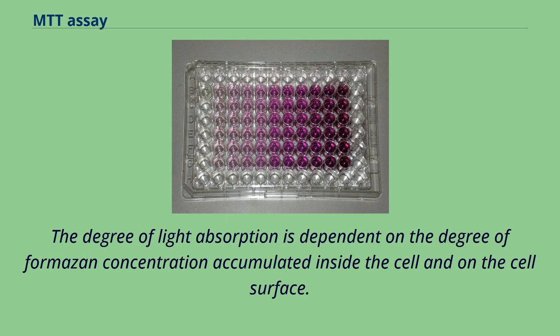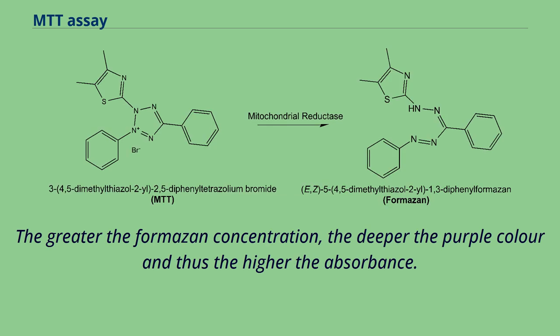The absorbance of this colored solution can be quantified by measuring at a certain wavelength by a spectrophotometer. The degree of light absorption is dependent on the degree of formazan concentration accumulated inside the cell and on the cell surface. The greater the formazan concentration, the deeper the purple color and thus the higher the absorbance.